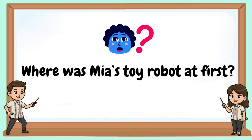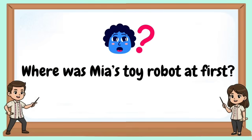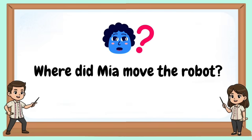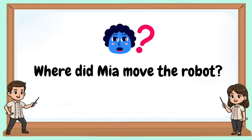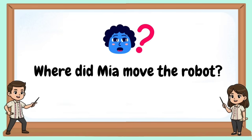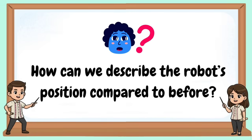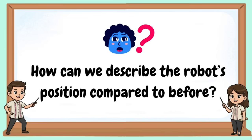Where was Mia's toy robot at first? Where did Mia move the robot? How can we describe the robot's position compared to before?